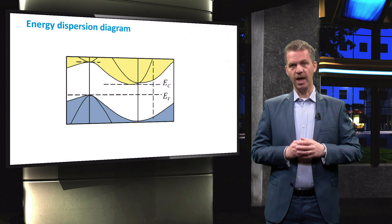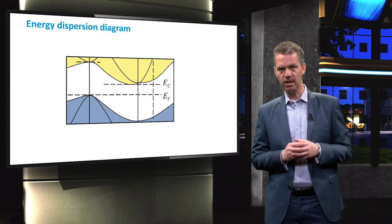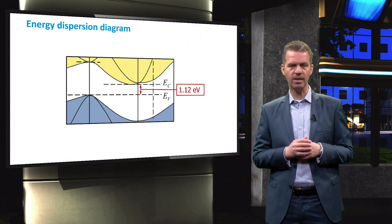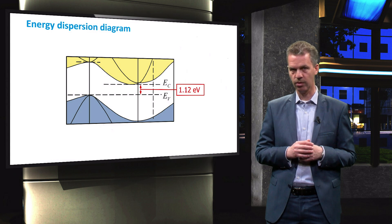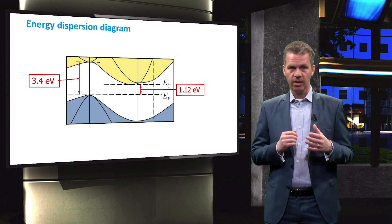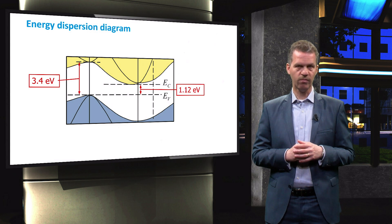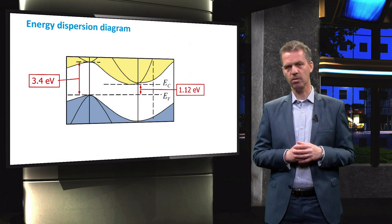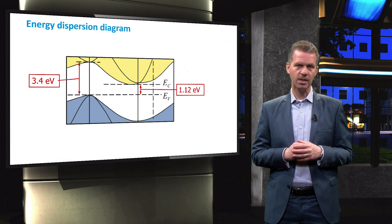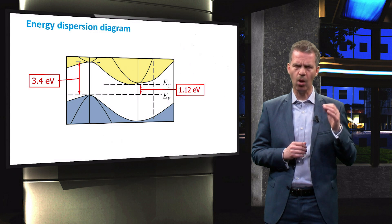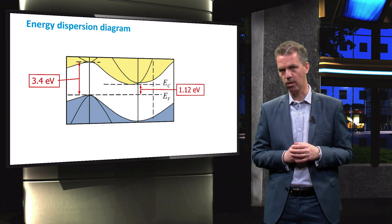If we look at the energy difference between the lowest point in the conduction band and the highest point in the valence band, then we find that the indirect bandgap of crystalline silicon is 1.12 eV. However, silicon also has a direct bandgap of 3.4 eV that is located at the center point of the reciprocal lattice. This implies that the absorption coefficient of the material is therefore increased by orders of magnitude for photon energies exceeding 3.4 eV.